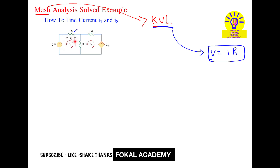In the first loop, there are two resistors and one voltage source. In this loop, the current I1 is flowing. The source voltage is 12V. This 12V equals the sum of voltage drops in this loop. The voltage drop across the 3-ohm resistor — the current I1 is passing through it — so by Ohm's law, the voltage drop equals 3 times I1.